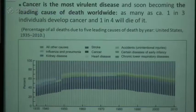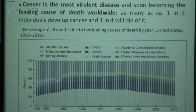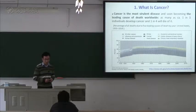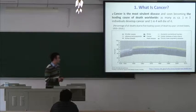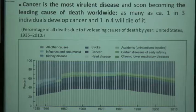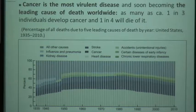Cancer is the most fearsome disease and is soon becoming the leading cause of death worldwide. As many as one in three individuals develop cancer and one in four will die of it. This figure shows the death rate over 75 years in the US. The dark blue is the cancer death rate and the light green is heart disease. In the last 30 years, from 1980 to 2010, the heart disease death rate decreased dramatically, but the cancer death rate did not change much — cancer remains a big challenge.